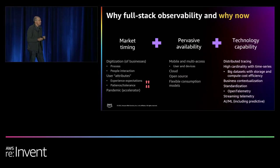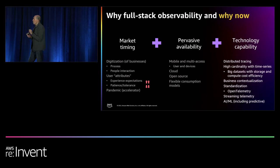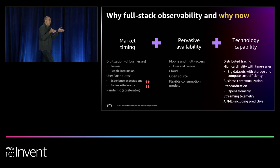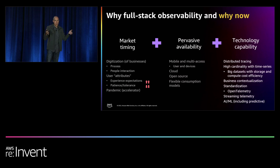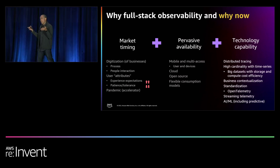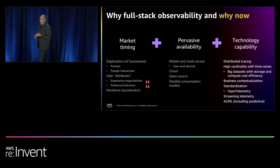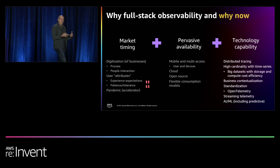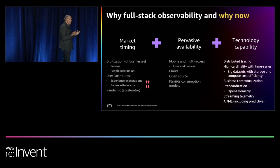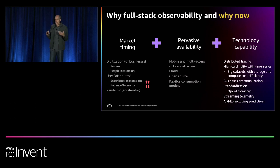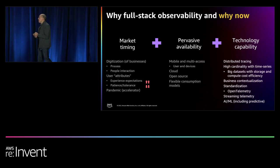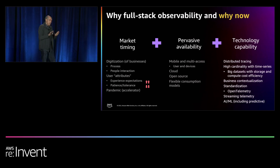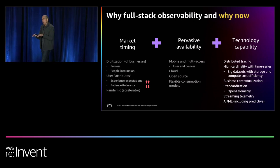From a technology perspective — the third pillar of why now — there are four key things. First, distributed tracing is now available and mainstream, particularly suited for cloud-native applications built on microservices. Second, OpenTelemetry — the second most popular open source project on CNCF, just behind Kubernetes — provides standardization for this. That's what Cisco leverages, along with many industry partners.